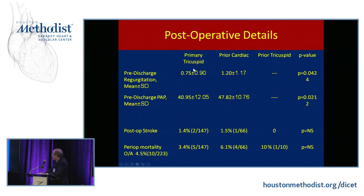The primary tricuspid patients are much healthier, with lower PA pressures, and perioperative mortality is 3.4% for this group. With our policy of really working hard to get these patients tuned up, we've made a significant impact on perioperative mortality — going down quite a bit from the standard repair figures.